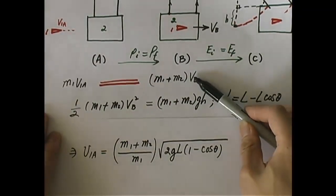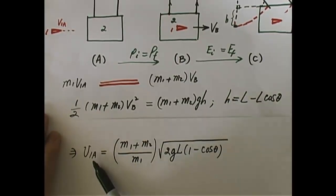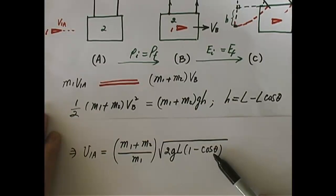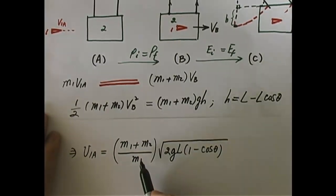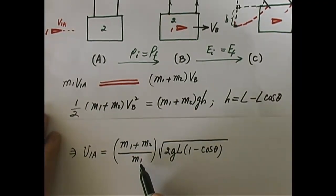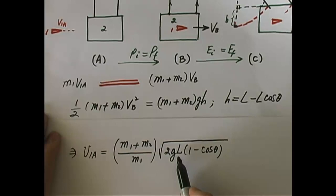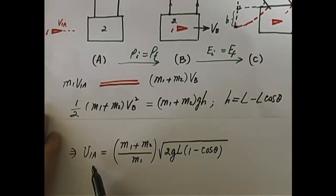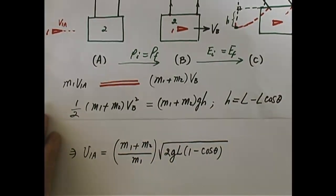Combining conservation of momentum and conservation of mechanical energy gives you the formula for V1A. All you need to do is measure the masses, the length of the string, and the angle of the final swing, and then you find the speed of the bullet. If mass m1 is very small but yields the same angle of swing, then V1A must be very large — a very light bullet must be going very fast to make that kind of impact. That makes perfect sense. This is the problem of the ballistic pendulum.